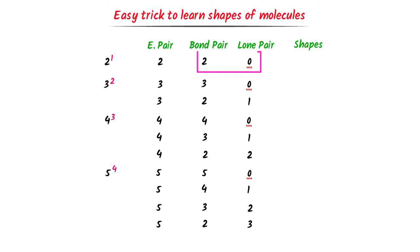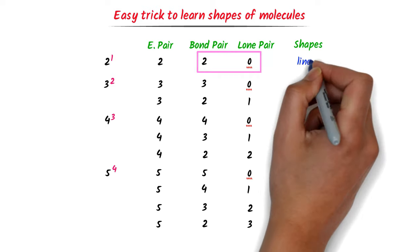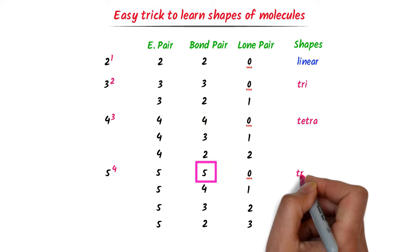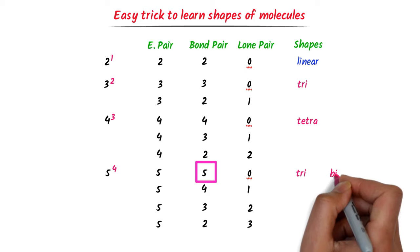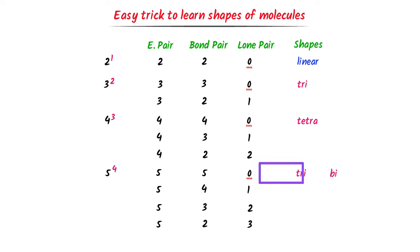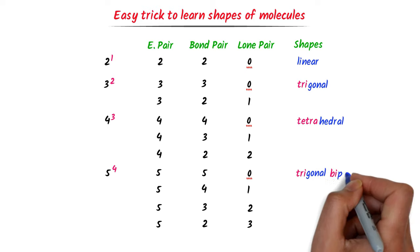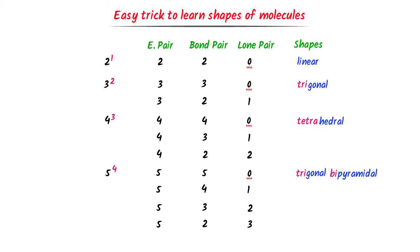Now listen carefully. If bond pair is two, it is always linear. For three bond pairs, I write 'tri' — trigonal. For four bond pairs, I write 'tetra' — tetrahedral. For five bond pairs, I write 'tri' (meaning three) plus 'bi' (meaning two), so tri plus bi equals five — giving trigonal bipyramidal. These are the shapes of molecules having zero lone pairs.